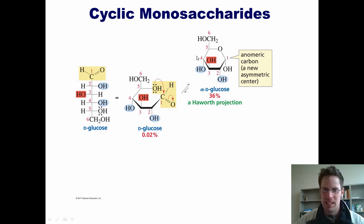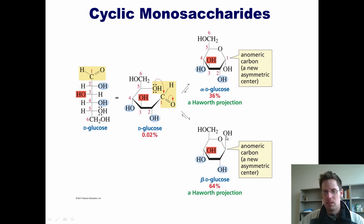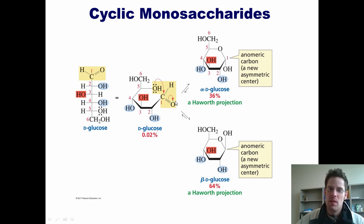When this OH closes on the carbonyl to form an OH dangling off of carbon 1, it can do so from two different directions. If it closes on this carbonyl carbon from the top, that ends up pointing the OH that's formed here down. But you can imagine the OH coming from underneath and pointing the resulting OH up. If it comes in from the top, the resulting OH dangling off of carbon 1 is pointing down. If it comes in from the bottom, the resulting OH coming off of carbon 1 is pointing up.